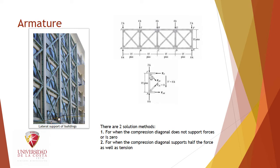Two methods can be applied. We will use Method One, which is based on the fact that if the diagonals are intentionally designed long and thin, it is reasonable to suppose that they cannot withstand a compressive force — otherwise they would deform and buckle easily. Consequently, the shear force of the panel is fully resisted by the tension diagonal, while the compression diagonal is assumed to be a zero-force element.